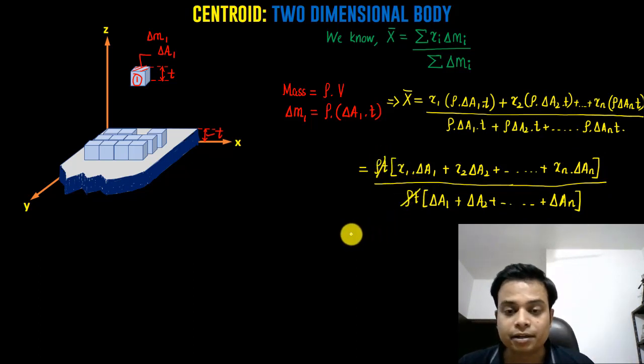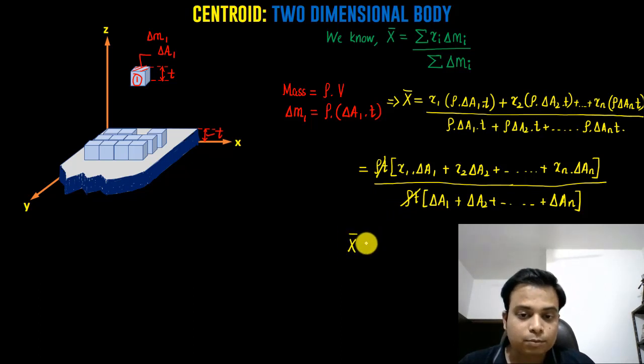It's X̄ = Σ(xᵢ × Δaᵢ) / Σ(Δaᵢ), where i goes from 1 to n. Now if you keep decreasing the size of the element...